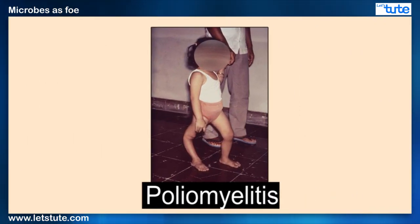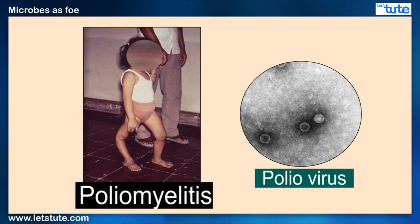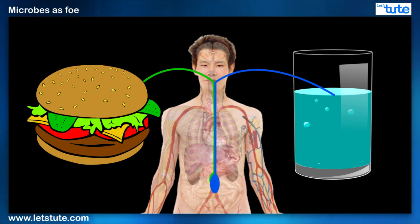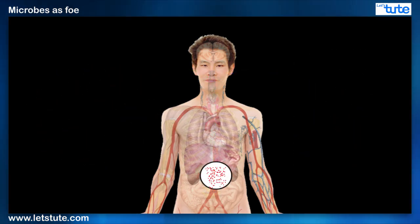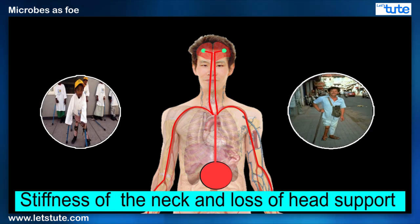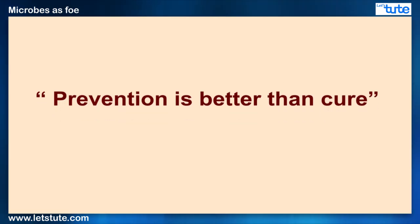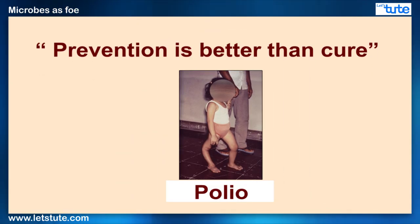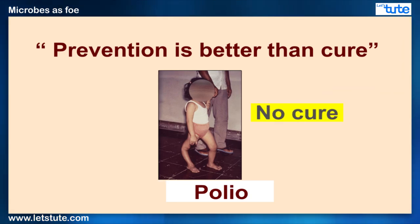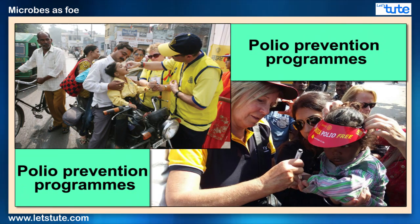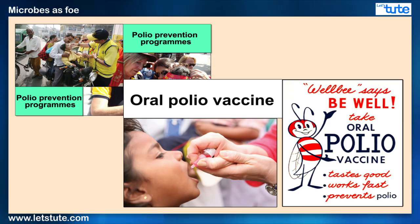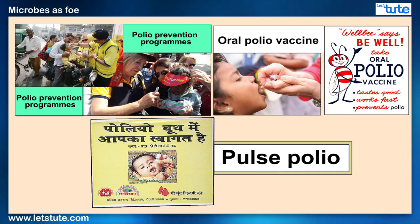Poliomyelitis, otherwise known as polio, is a disease named due to its causative agent, the poliovirus. It enters the body through food or water. The virus multiplies in intestinal cells and then reaches the brain through blood, causing stiffness of the neck and loss of head support. There is no better place to apply the phrase 'prevention is better than cure' than in the case of polio, mainly because this disease has no cure. As a result, massive polio prevention campaigns such as oral polio vaccines and pulse polio programs are run by the government to deliver polio vaccines to children at regular intervals.